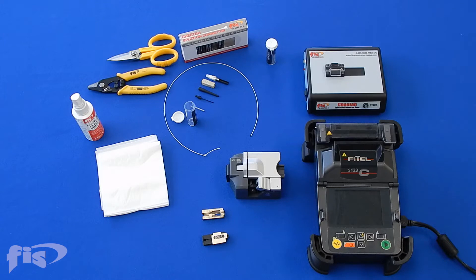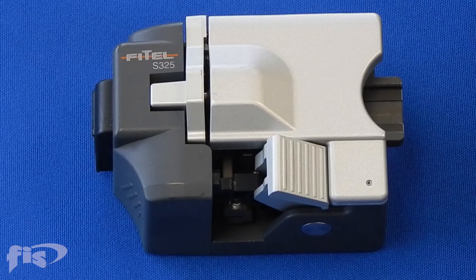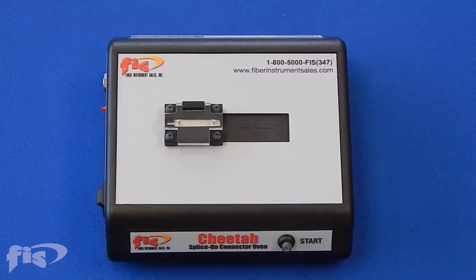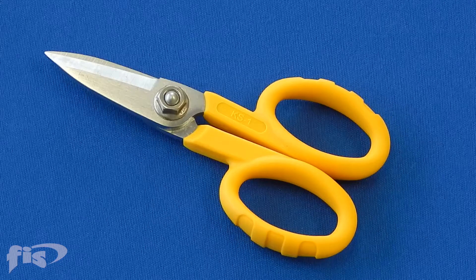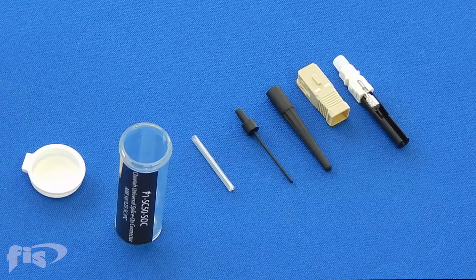Here are the items necessary for installation: fusion splicing machine, high precision cleaver, optional heat shrink oven, fiber stripper and scissors, cleaning solution, and the FIS Cheetah Connector.